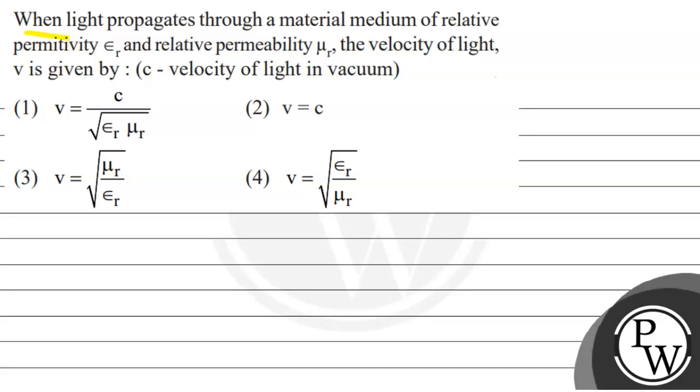This question says that when light propagates through a material medium of relative permittivity epsilon_r and relative permeability mu_r, the velocity of light v is given by c, velocity of light in vacuum.